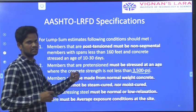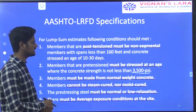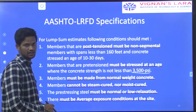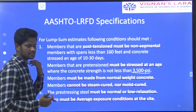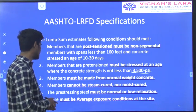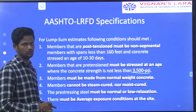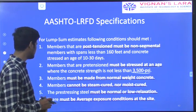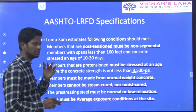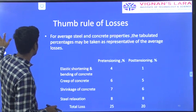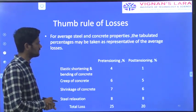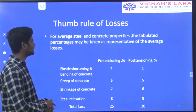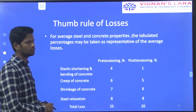While stretching the tensioned members, they must be stressed at an age where the pre-tensioned force is at least 3500 psi. Members must be made from normal weight concrete — not lightweight or heavyweight concrete. Members cannot be steam-cured or moist-cured. The pre-stressing steel must have normal low relaxation. For average steel and concrete properties, the tabulated percentages may be taken as representative of average losses.